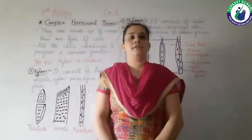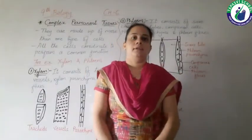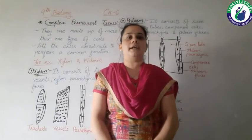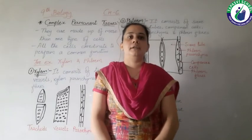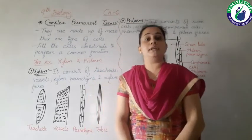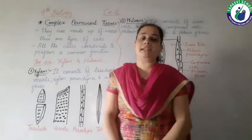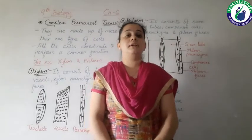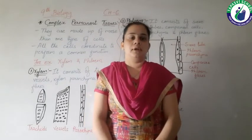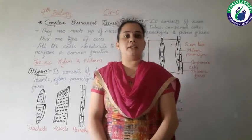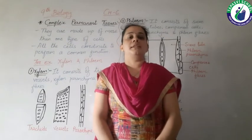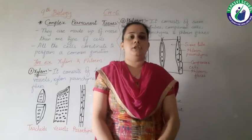Good morning students. Here we are studying chapter number 6 of standard 9. Let's recall what we have studied in the previous lectures. We have studied about different plant tissues, that is meristematic tissues and then simple permanent tissues.